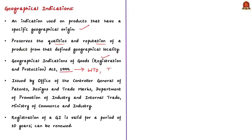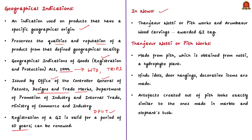The Geographical Indications of Goods Registration and Protection Act of 1999 aims to provide for the registration and better protection of geographical indications, and is in compliance with the WTO's TRIPS Agreement. The tags are issued by the Office of the Controller General of Patents, Designs and Trademarks, which comes under the Department of Promotion of Industry and Internal Trade in the Ministry of Commerce and Industry. The registration of a GI tag is valid for a period of 10 years and can be renewed for further periods of 10 years each. The news article reports that Tanjavur Nethi works and Arumbavur wood carvings have been given GI tags.